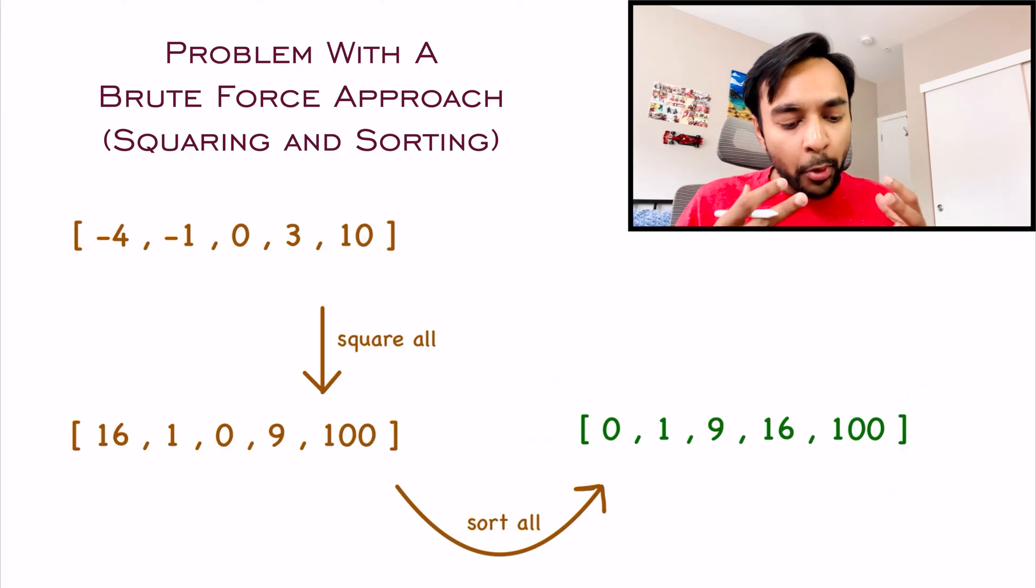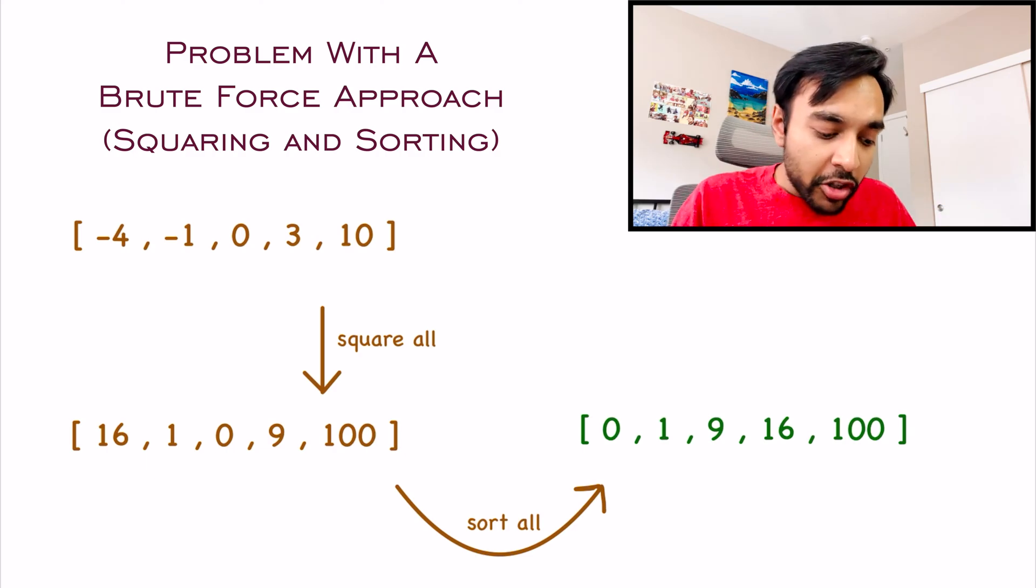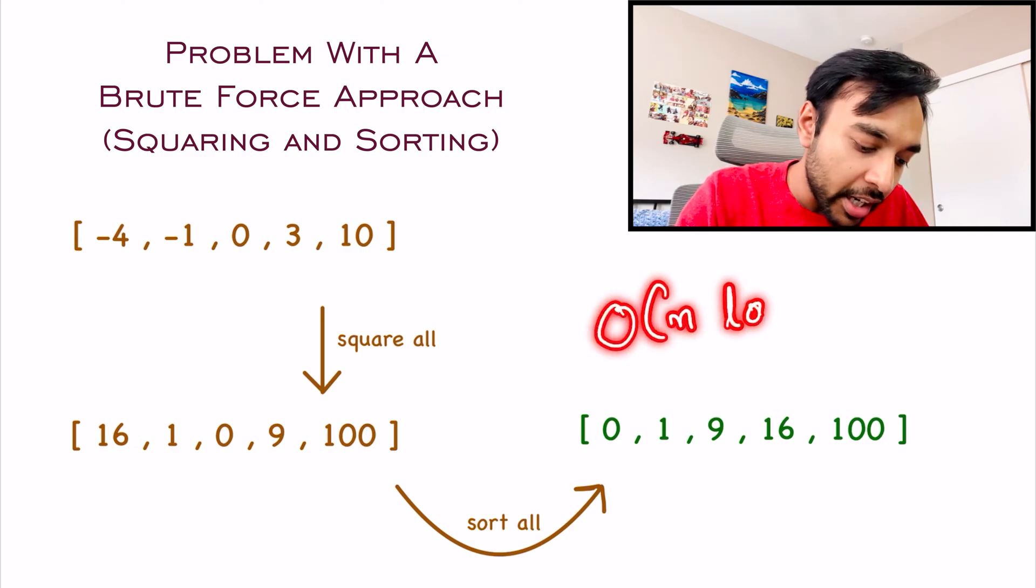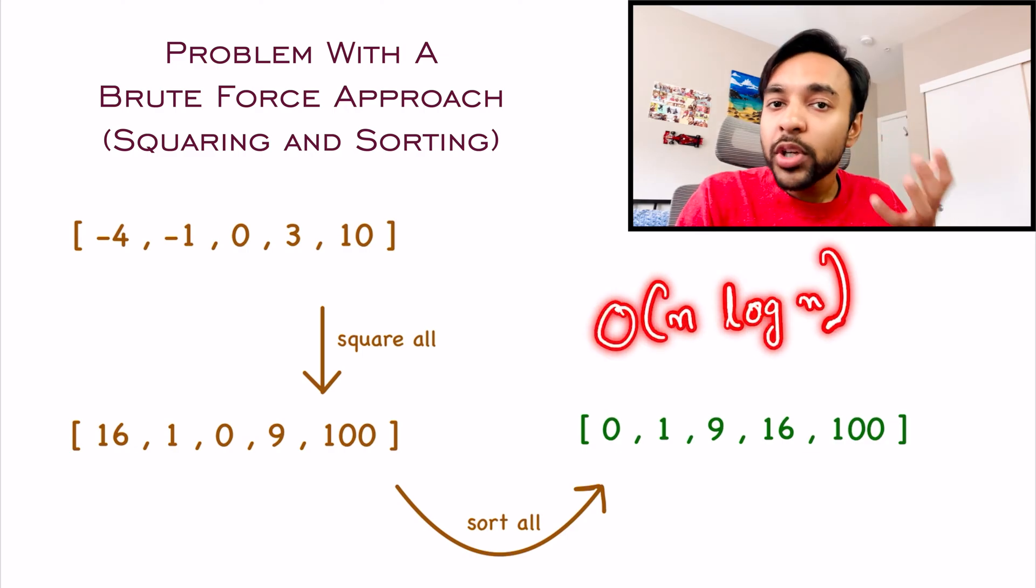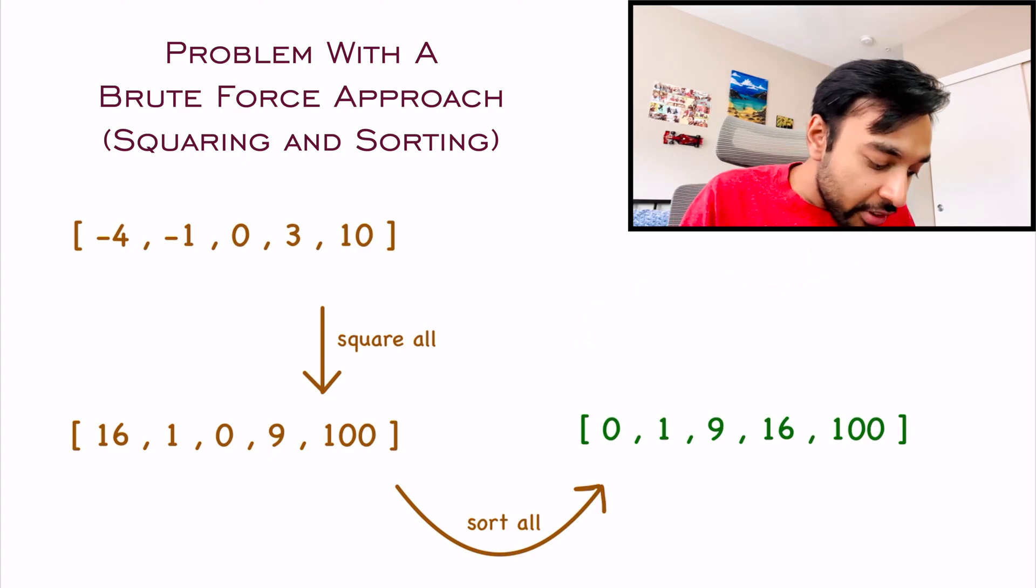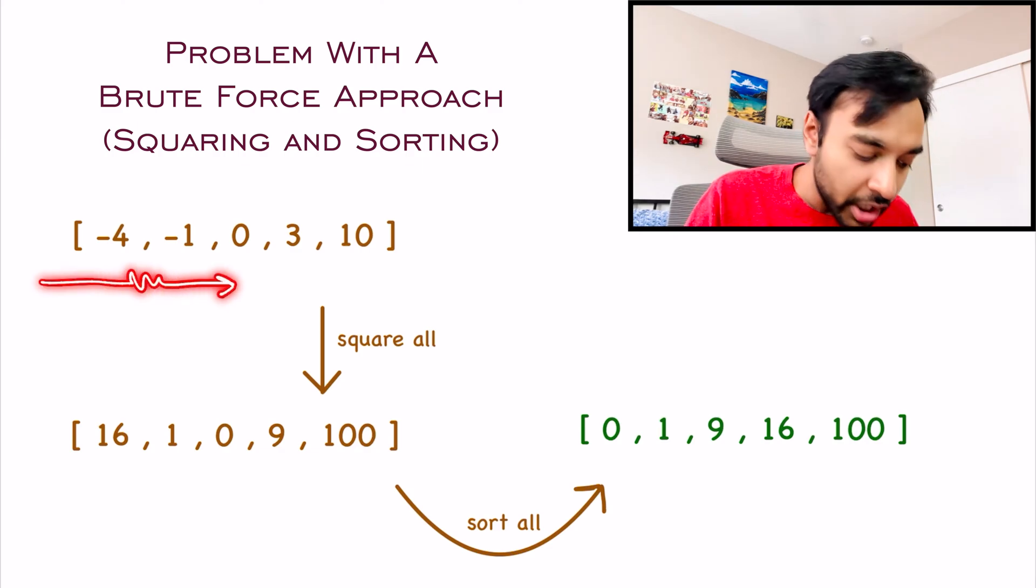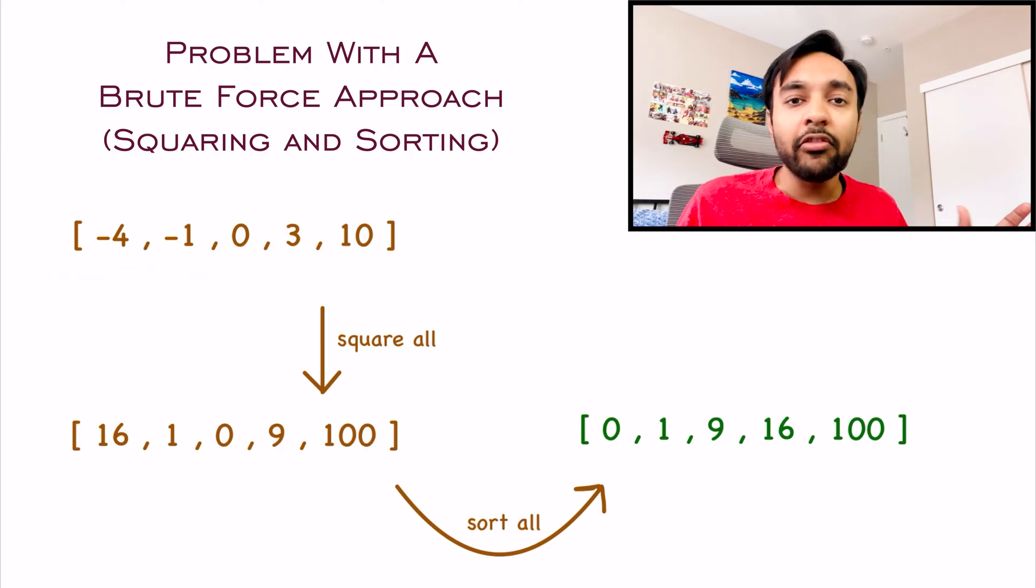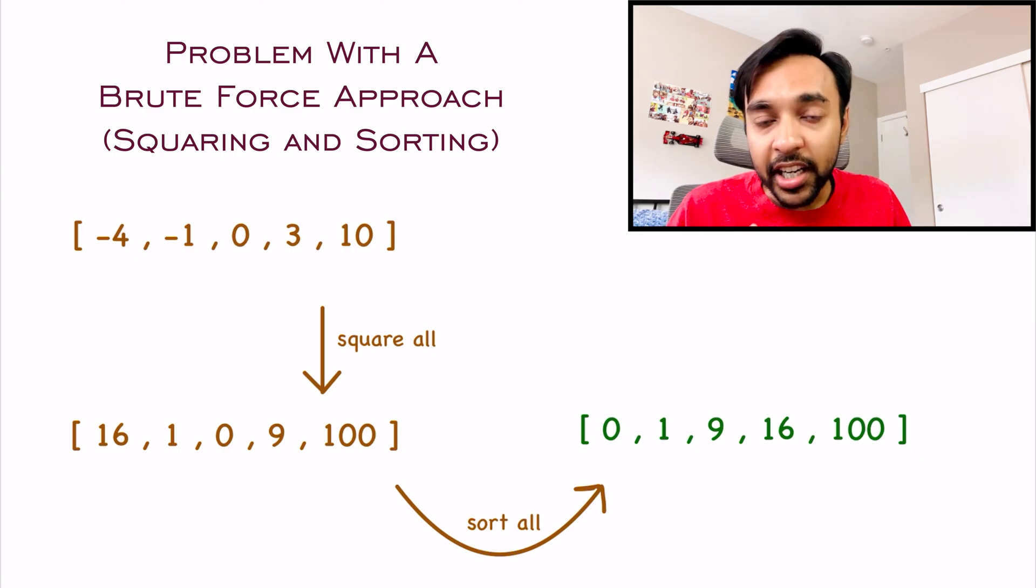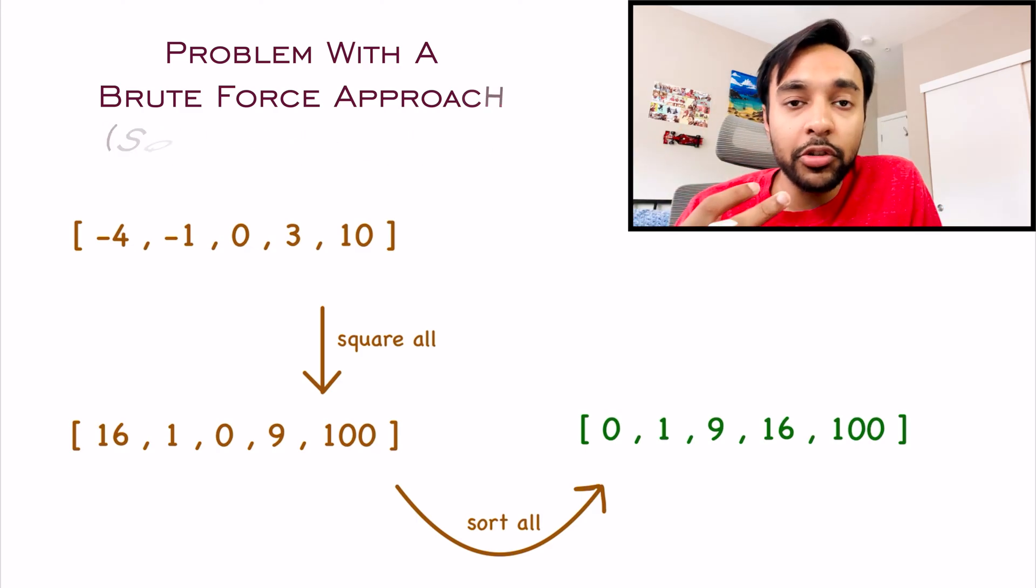But, what is the problem with this approach? This is the correct answer, right? When you try to sort your array, the best time complexity that you can get would be order of n log n. That will be with the quicksort algorithm technique. But, if you notice, we never take any advantage of the fact that this array is already sorted. Even if this array was in any order, you would get your solution in order of n log n. So, definitely, we need to find an optimal solution.